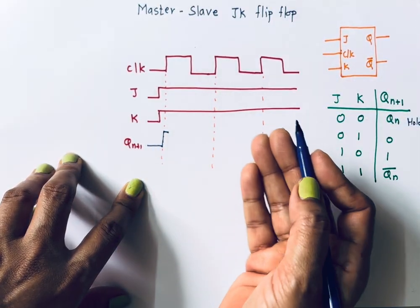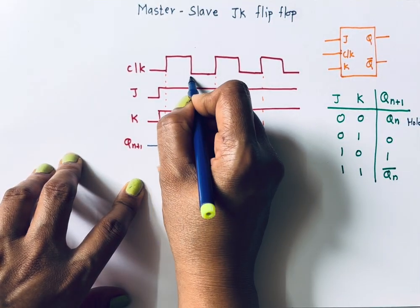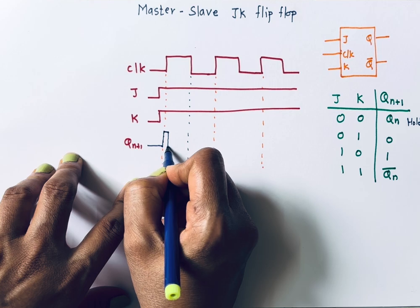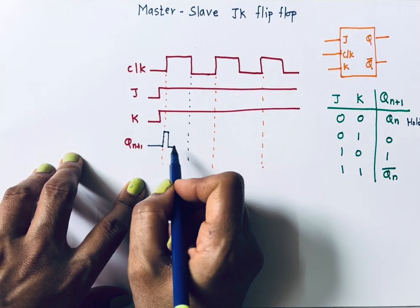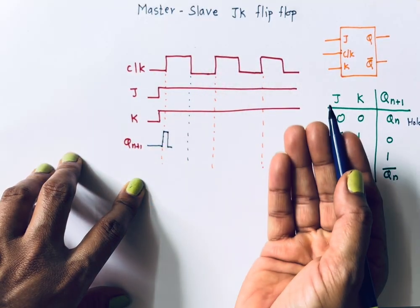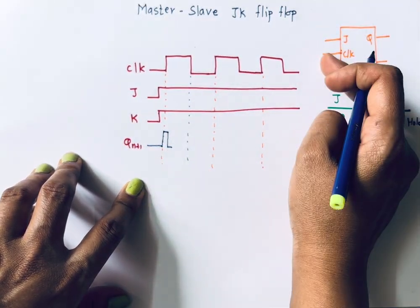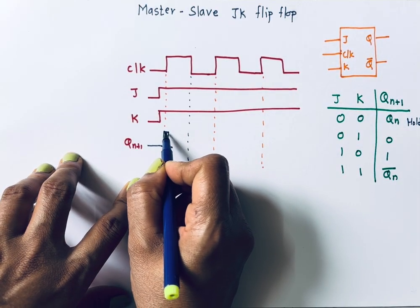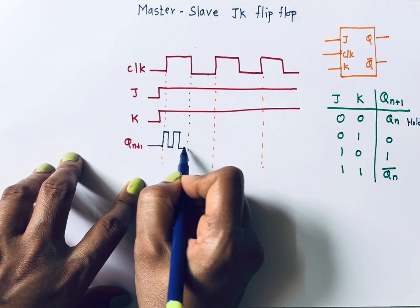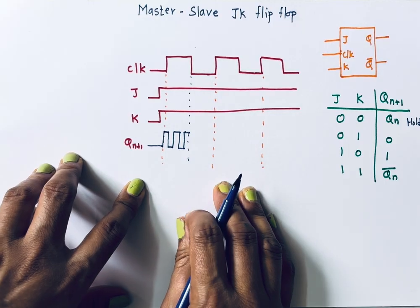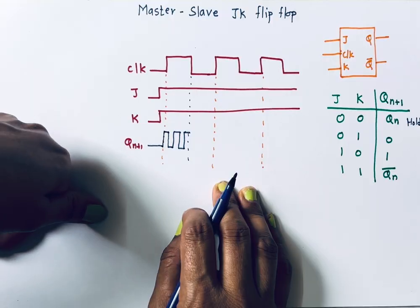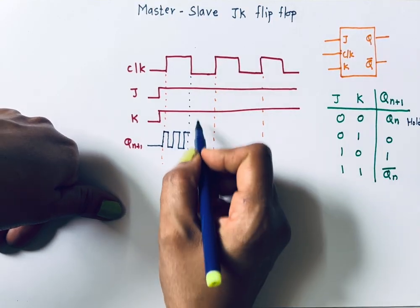The flip-flop will again complement that output. It assumes Q-n is now one, so it should make it zero. After some time — since the duration of the positive level is much longer than this change — it will again assume Q-n is one and make it zero, then one, then zero, then one. So during the positive level the output is not constant; it keeps on changing. This is called the race around condition or toggling.